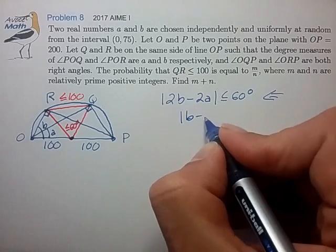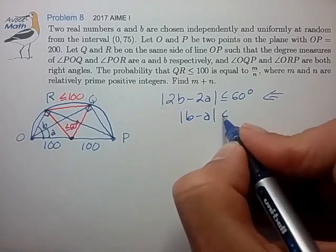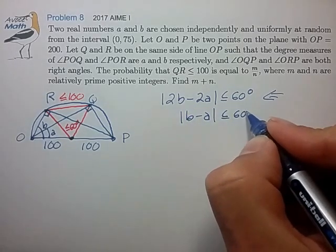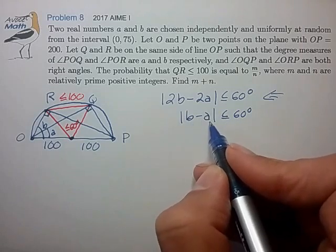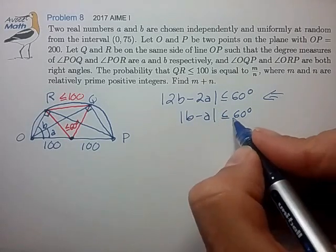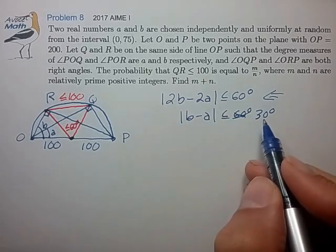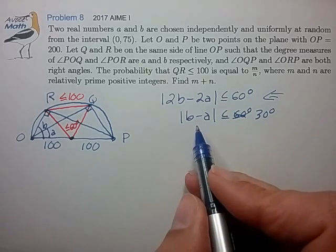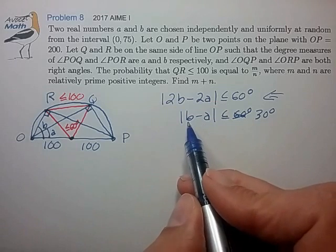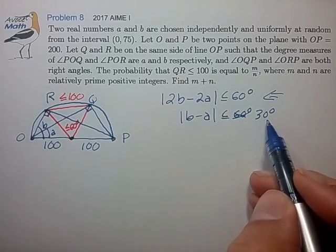We can divide by 2 to find that angle B minus A absolute value has to be less than 30 degrees, and it looks like we can work with this now. So let's see what is the probability that the difference between B and A is less than 30 degrees.